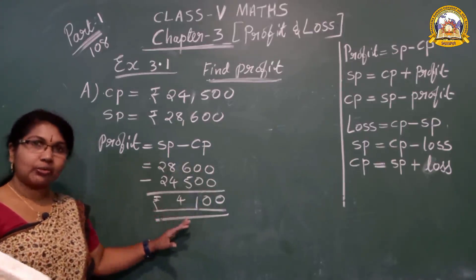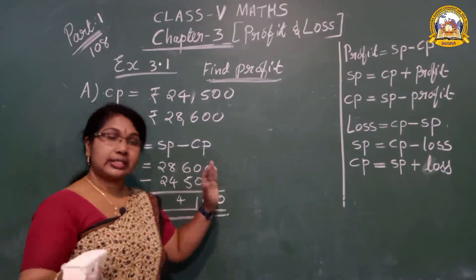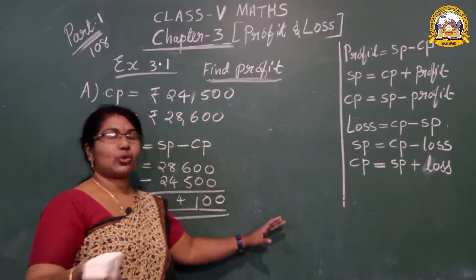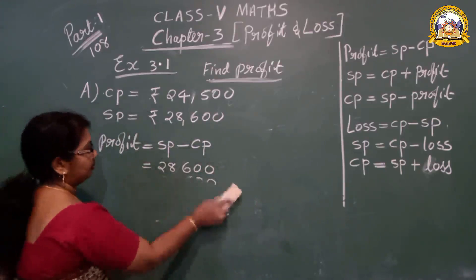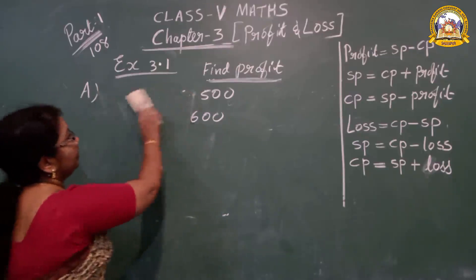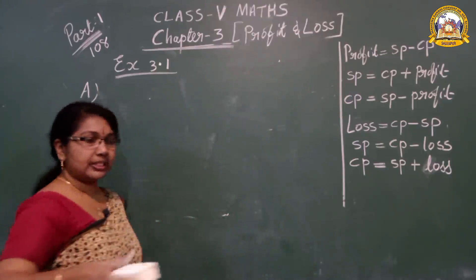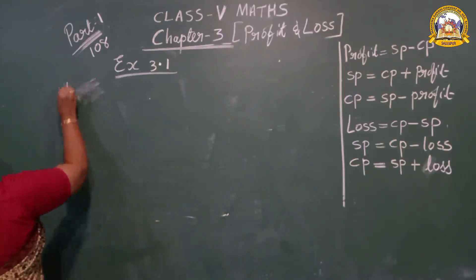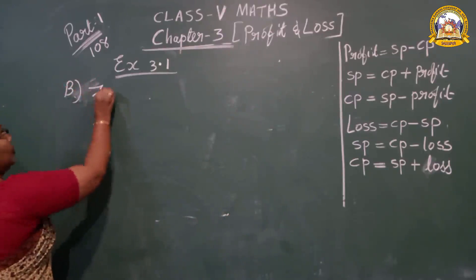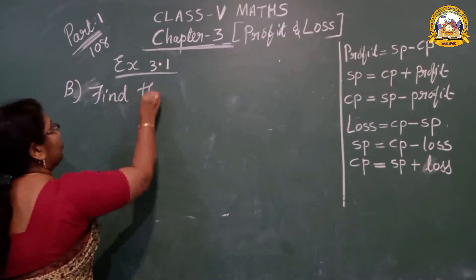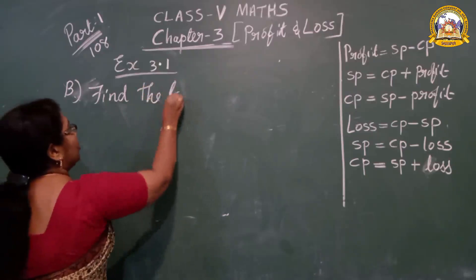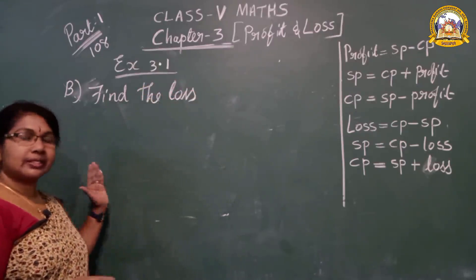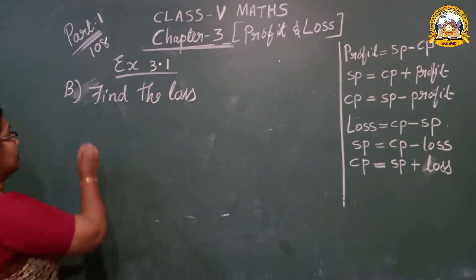I think you have learned the formula. Profit is equal to Selling Price minus Cost Price. Then loss — question number B, just the opposite is written: find the loss. Loss formula: Cost Price minus Selling Price.